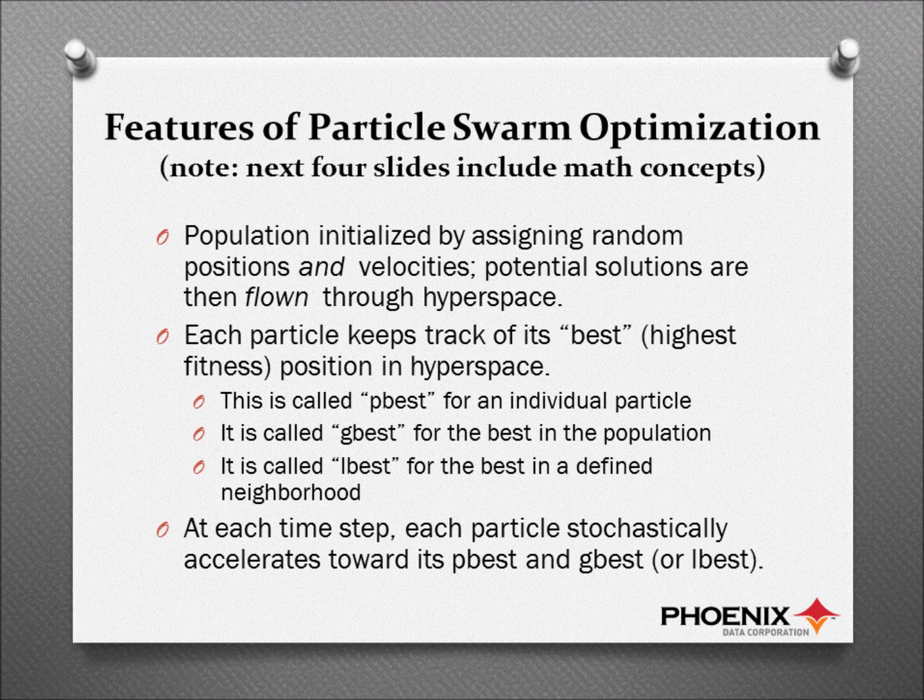What we do is something that's done in every evolutionary computation approach. We start with a population — a few dozen potential solutions to the problem. We initialize this population by assigning random positions and velocities, and then we fly them through the hyperspace, through the problem space. We may have 50 dimensions to a problem; we're working on a logistics problem right now that has 39 dimensions to it. Each one of these potential solutions we call a particle.